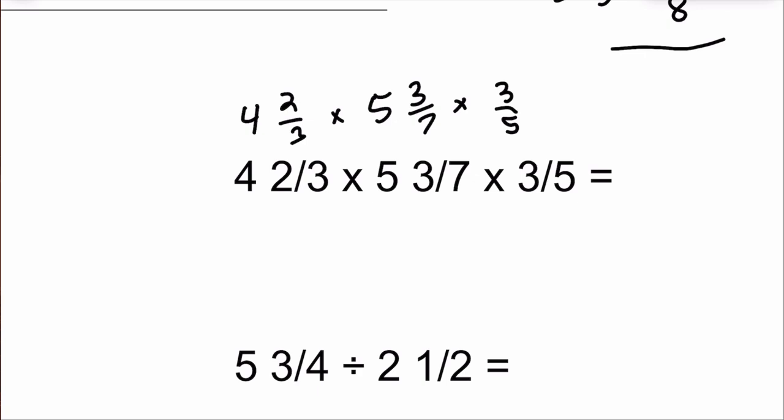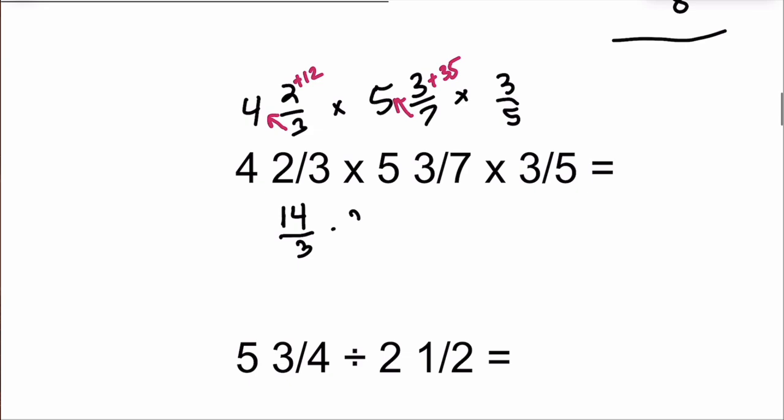4 and 2 thirds times 5 and 3 sevenths times 3 fifths. And you should not write them with the slash. What we do want to happen here is we want to multiply the whole number part and the denominator. So we're going to multiply, get 12, and then we're going to add. Multiply, get 35, and then we're going to add. So the fractions I'm really going to do are 2 plus 12 is 14 thirds. 3 plus 35 is 38 sevenths. And then 3 fifths is perfectly fine the way that it goes.